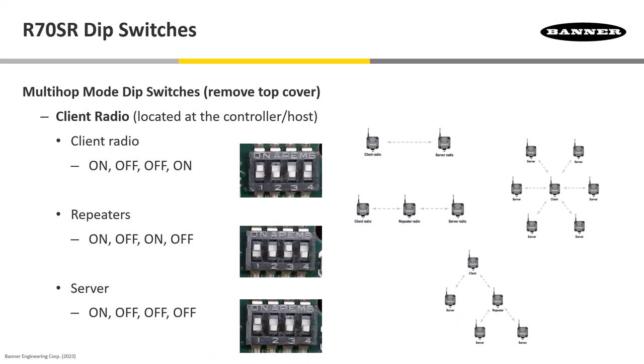In Multi-Hop Mode, we are going to set up the client and the repeaters and the servers a little bit different because we're going to have that first DIP switch always on. For the client radio, we'll be in an on-off, off-on setup there as seen in the picture. For repeaters, we're going to be on-off, on-off. And for servers, we are just going to have that first DIP switch on.